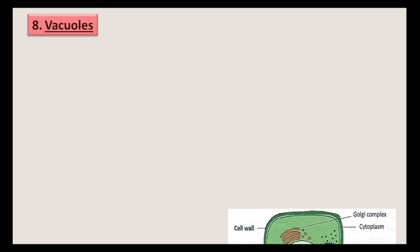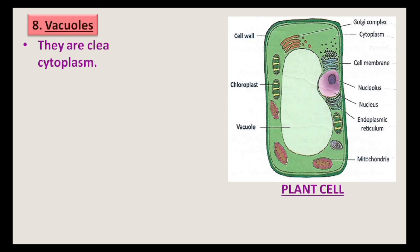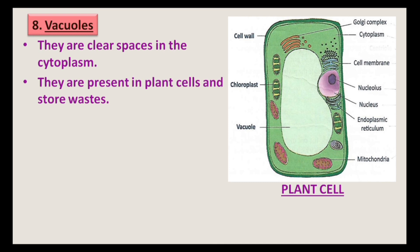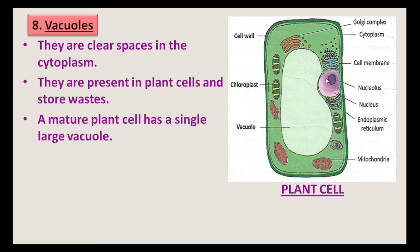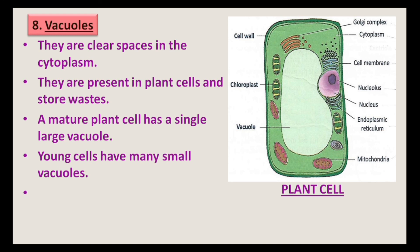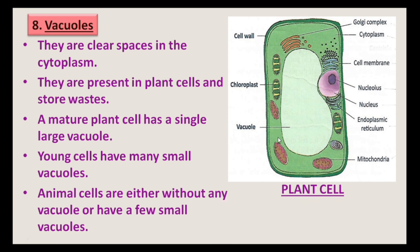Vacuoles are clear spaces in the cell cytoplasm. They are present in plant cells and store wastes. A mature plant cell has a single large vacuole, while young cells have many small vacuoles. Animal cells are either without any vacuole or have a few small vacuoles.